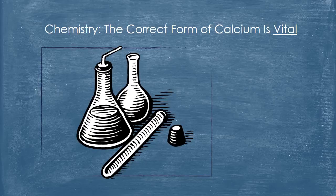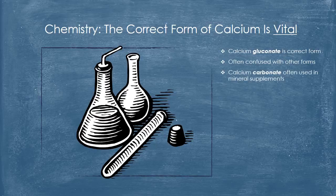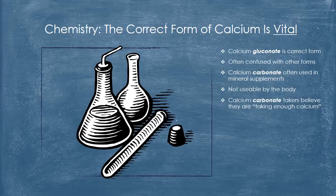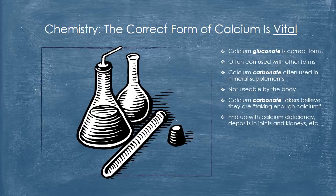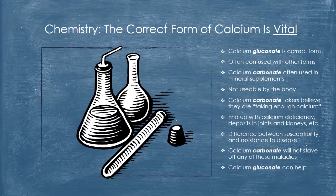When we speak of reactions, we're talking about chemistry, and there certainly is a lot of chemistry to calcium. The correct form of calcium is vital. Calcium gluconate — the actual form needed — can often be confused with other forms. Most often, calcium carbonate is used in supplemental minerals, a form which is not usable by the body. Therefore, persons taking calcium carbonate who believe they are taking enough calcium can actually end up in deficiency, or worse, with calcium deposits in joints, kidneys, etc. Using one form or the other can account for, in a child for instance, the difference between susceptibility and resistance to fever-producing diseases, colds, and even polio. No amount of calcium carbonate will stave off any of these maladies; calcium gluconate, however, may be of service.